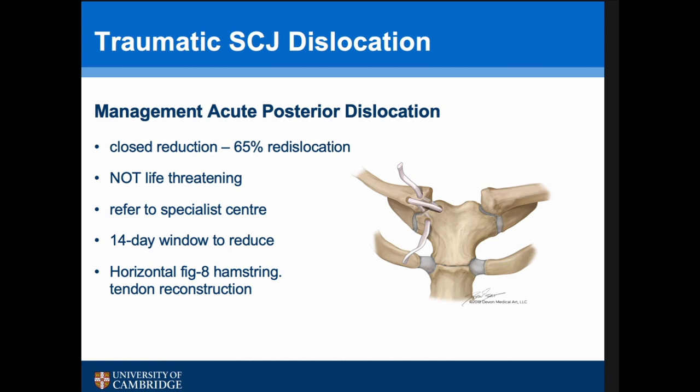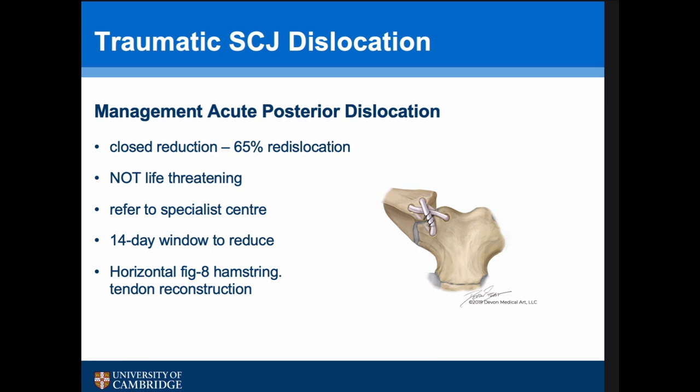To reduce a posterior dislocation, you do actually need to undertake a reconstruction — you can't just repair the posterior capsular tissue. We would normally consider a horizontal figure-of-eight hamstring tendon reconstruction. These are particularly rare; I've just published a series of 20 acute posterior dislocations fixed within 14 days, but it took 11 years to collect them — probably fewer than two a year.